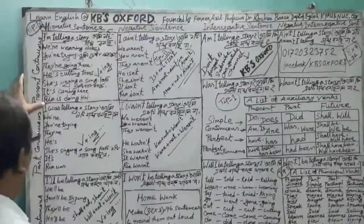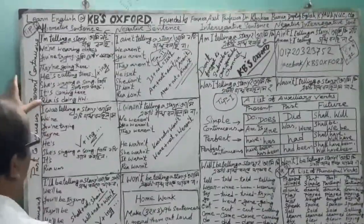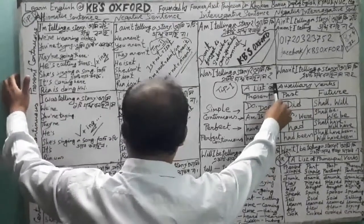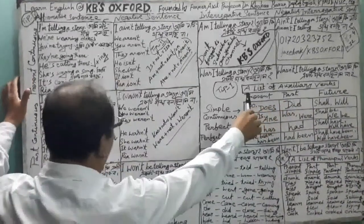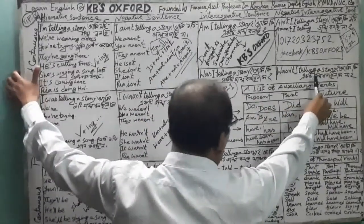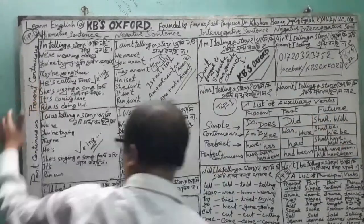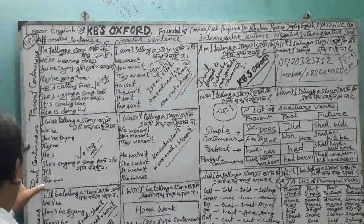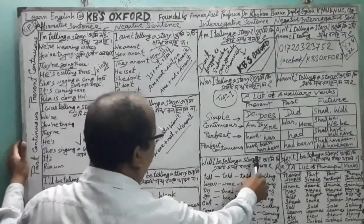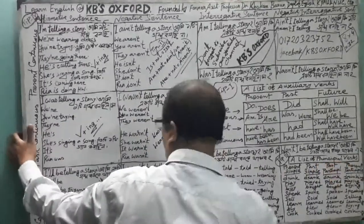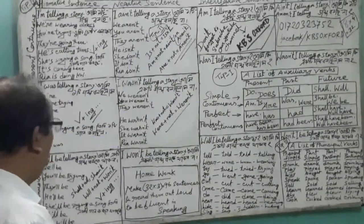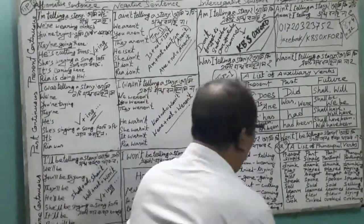Now the last subject, 'Ria'. Present: Ria is doing homework. Ria isn't doing homework. Is Ria doing homework? Isn't Ria doing homework? Past: Ria was doing homework. Ria wasn't doing homework. Was Ria doing homework? Wasn't Ria doing homework? Future: Ria will be doing homework. Ria won't be doing homework. Will Ria be doing homework? Won't Ria be doing homework?